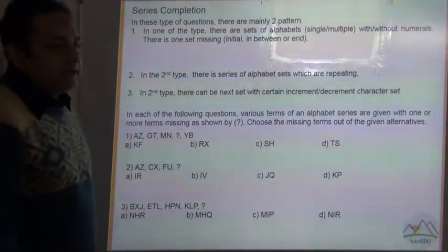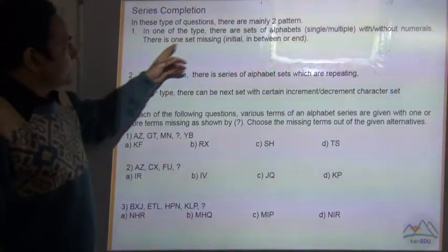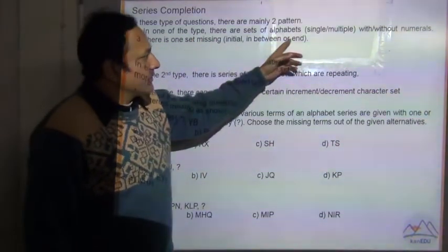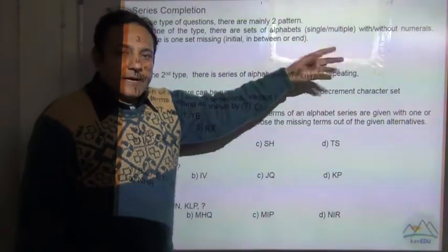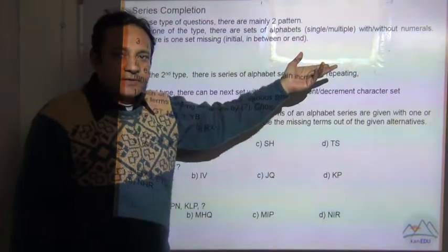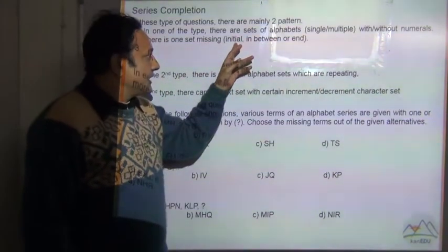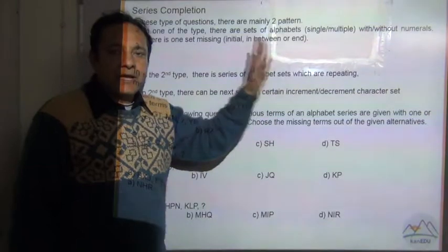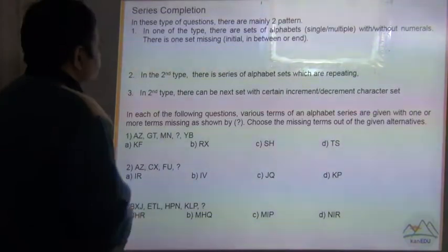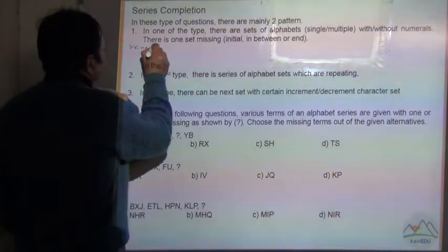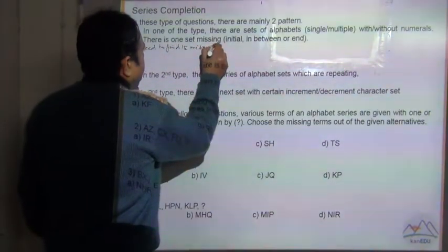In these types of questions, there are mainly two types of patterns. The first type involves sets of alphabets — single or multiple, with or without numerals. There is one set missing, and the missing set can be either at the beginning, in between, or at the end of the series. We need to find that missing set.